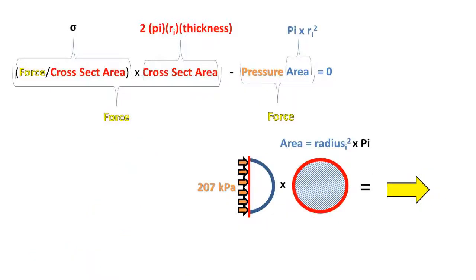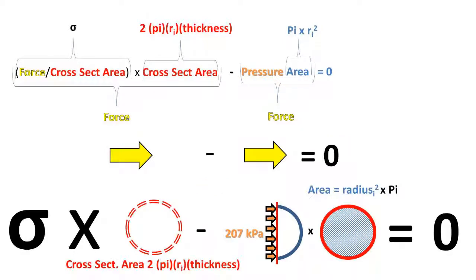Recall from the previous slide that pressure times the internal cross-sectional area gives the force acting 90 degrees perpendicular to the cross-sectional plane. Setting up the equilibrium equation, the forces balance to equal zero.